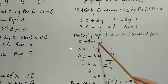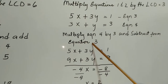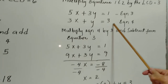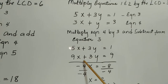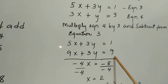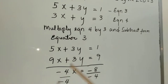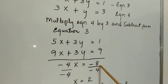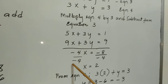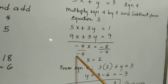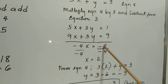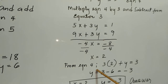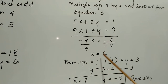Rewriting equation 3: 5x plus 3y equals 1. Equation 4 multiplied by 3 gives 9x plus 3y equals 9. Subtracting: 5x minus 9x equals negative 4x, and 1 minus 9 equals negative 8. Dividing both sides by negative 4, we get x equals 2.